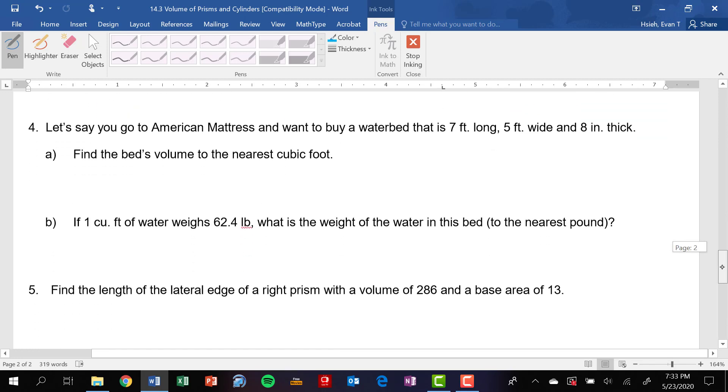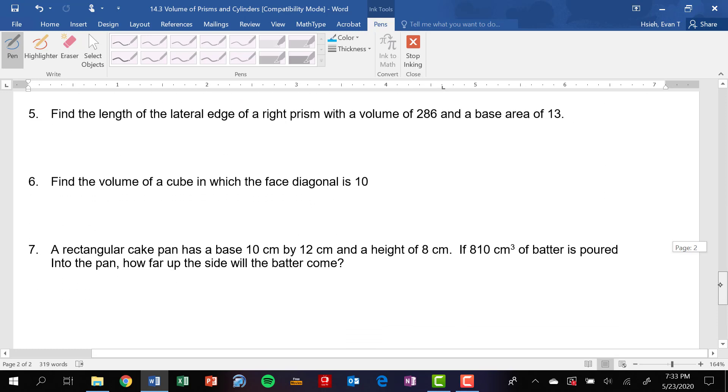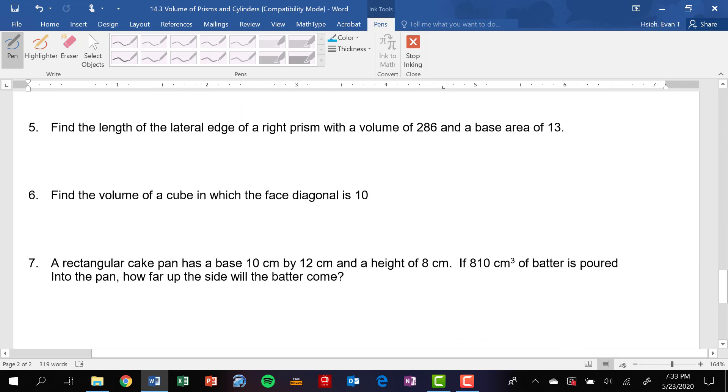Okay, let's jump all the way down to five here. The length of the lateral edge of the right prism. So you have a right prism, which means it stands straight up and down. The lateral edge is going to be the same thing as the height of the prism. You're given the volume and you're given the base. So you know that the volume is equal to the base times the height. So I can plug 13 in for the base, and I know the volume is going to be 286, and I can just solve for the height for that one. I think the height ends up being equal to 22.